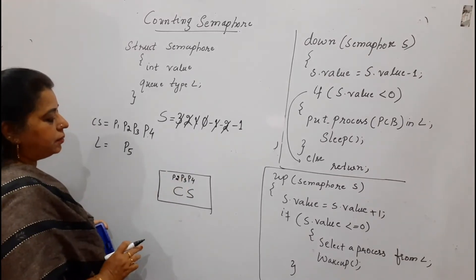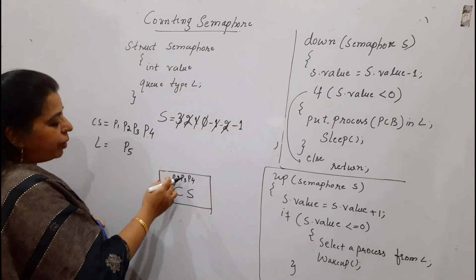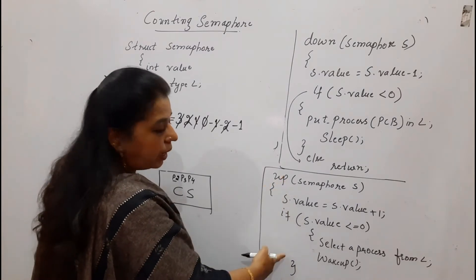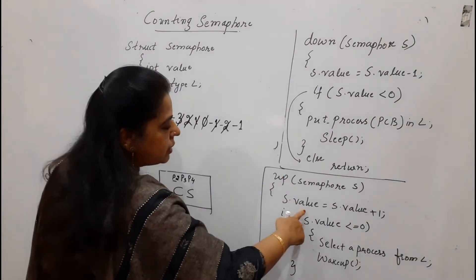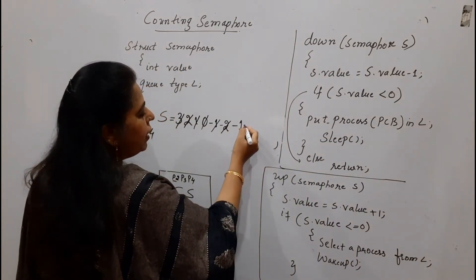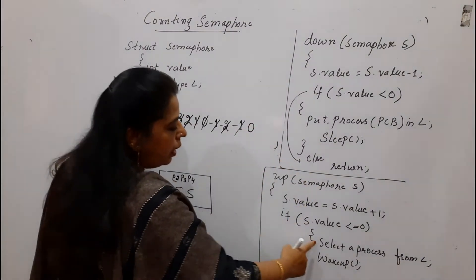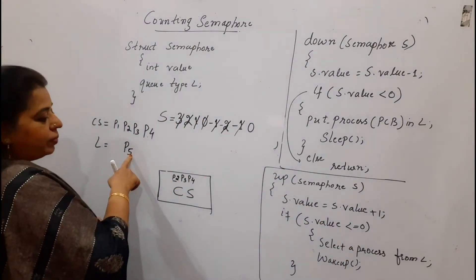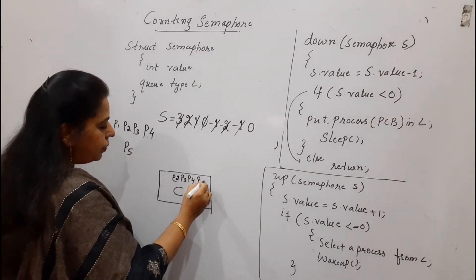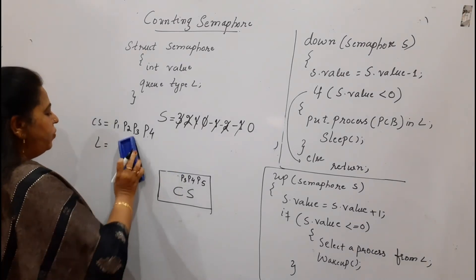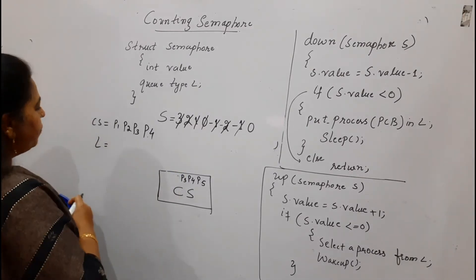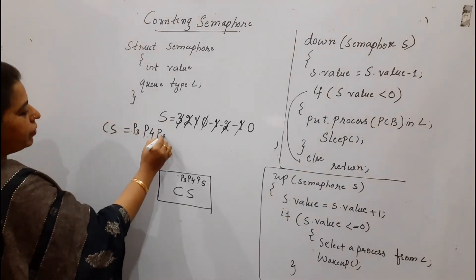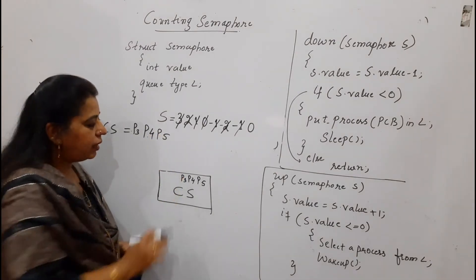There is still one process remaining in the queue. Suppose P2 wants to come out from the critical section. It runs the exit code — the up operation on the semaphore: S.value equals S.value plus 1. Incrementing by 1 gives 0, and 0 less than or equal to 0 is true, so it selects a process from the queue and wakes it up — P5 enters the critical section. Now P2 has come out and P5 is in. At present, the processes in the critical section are P3, P4, and P5.